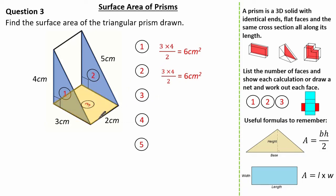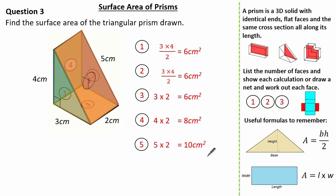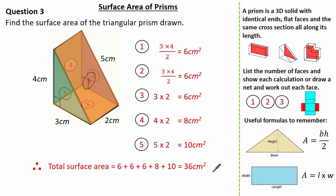Face 3 is a 3 by 2 rectangle, so the area is 6 cm². Face 4 is a 4 by 2 rectangle, giving 8 cm². Face 5 is a 5 by 2 rectangle, giving 10 cm². Therefore the total surface area is the sum of all these faces, giving 36 cm².